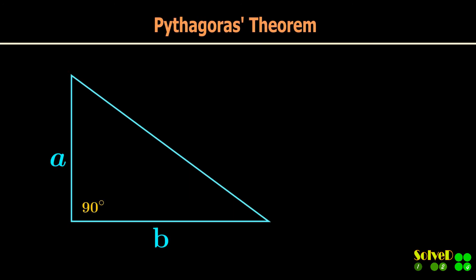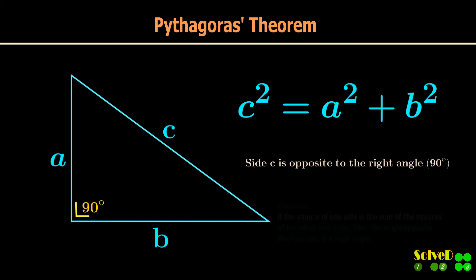Pythagoras theorem: In a right-angled triangle, the sides are related by this equation: c² = a² + b². Note the side c is opposite to the right angle. Conversely, if the square of one side is the sum of the squares of the other two sides, then the angle opposite the first side is a right angle.